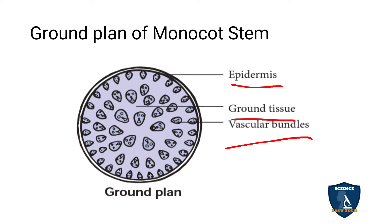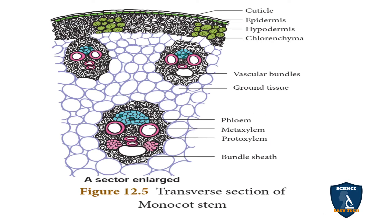In monocot stem, there is no pericycle, no endodermis, and no distinct cortex. We only see epidermis, ground tissue, and vascular tissue. The epidermis is a single layer of parenchyma cells protected by a cuticle; its function is protection of inner tissues. The hypodermis is made up of 2 to 3 layers of sclerenchyma cells, with chlorenchyma cells in between. Sclerenchyma gives mechanical support and chlorenchyma performs photosynthesis.